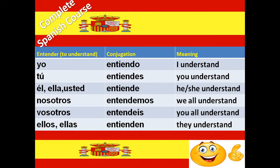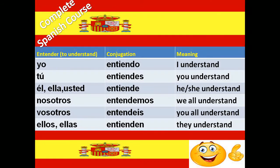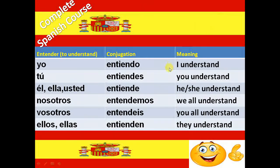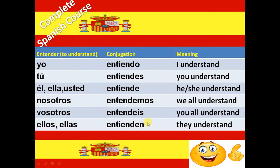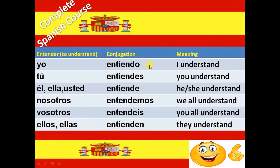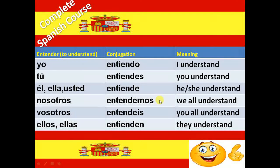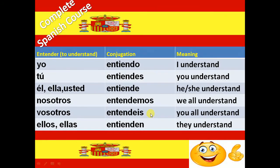Next irregular verb is Entender. Entender means to understand. The conjugation of Entender verb is Entiendo, Entiendes, Entiende, Entendemos, Entendéis and Entienden.